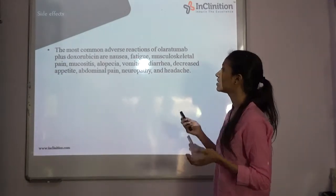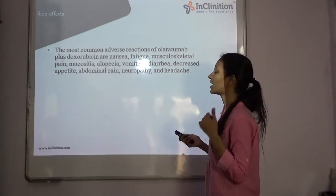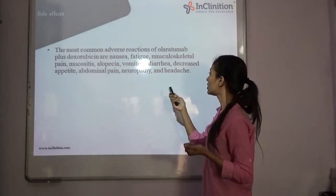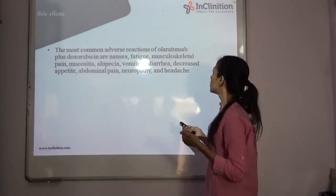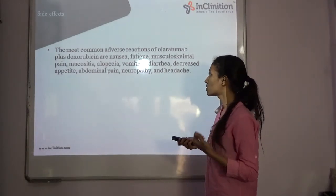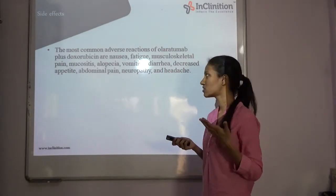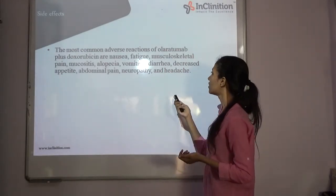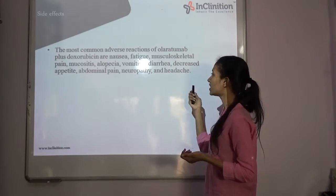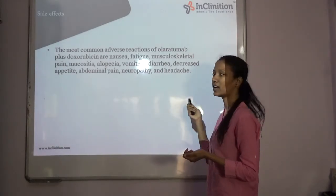The most common side effects of Olaratumab and Doxorubicin are nausea, fatigue, musculoskeletal pain, mucositis, alopecia (significant hair loss), vomiting, diarrhea, decreased appetite, abdominal pain, neuropathy, and headache.